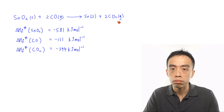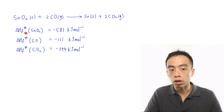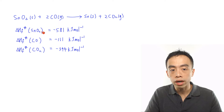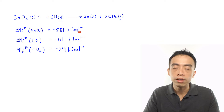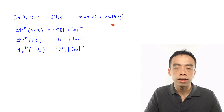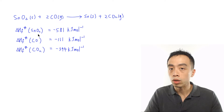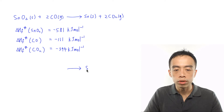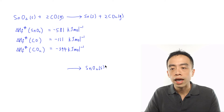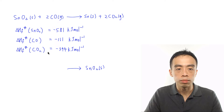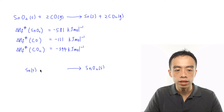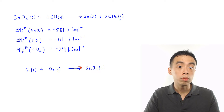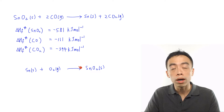Before we can draw the energy cycle, we must be able to write out an equation for the formation of each compound. If you cannot write out this equation — which is part of the energy cycle — we will have problems drawing the entire cycle. For tin oxide, the product is tin oxide, and when we talk about enthalpy change of formation, the reference point is per mole of the compound being formed.